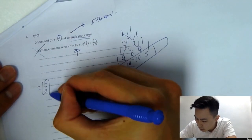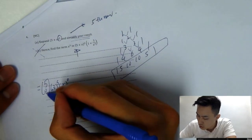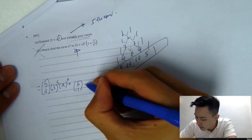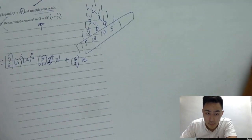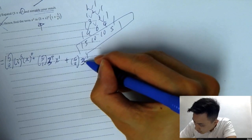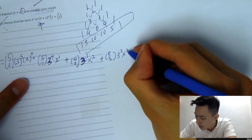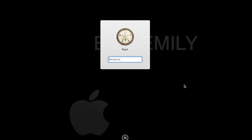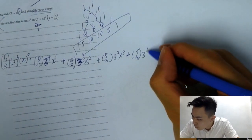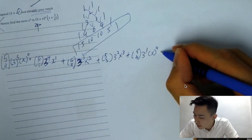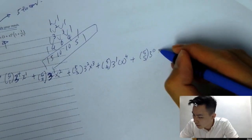Now we apply the expansion formula. Starting with 5 choose 0 — always start from 0 — so A is 3 to the power 5 minus 0 which is 5, and x to the power 0. Plus 5 choose 1, then 3 to the power 4, and x to the power 1. Plus 5 choose 2, then 3 to the power 3, and x to the power 2. Plus 5 choose 3, then 3 to the power 2, and x to the power 3. Plus 5 choose 4, then 3 to the power 1, and x to the power 4. Finally we end with 5 choose 5, then 3 to the power 0, and x to the power 5.